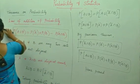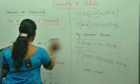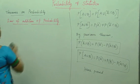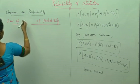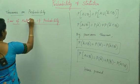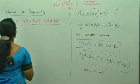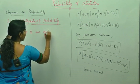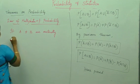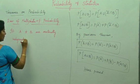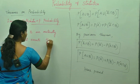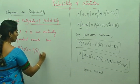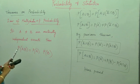Similarly, the next one is the law of multiplication of probability, which is very simple and proved the same way. Law of multiplication of probability: if A and B are mutually independent events, then P(AB) = P(A) × P(B).